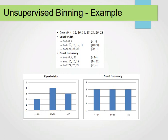Looking at the histogram: for equal width, the first bin has 2 elements, the second bin has 4 elements, and the third bin has 3 elements. For equal frequency, each bin has 3 elements. I hope this makes sense — it's quite simple, but I just wanted to explain it. In my next video, I'll start explaining bivariate analysis. Thanks for watching!